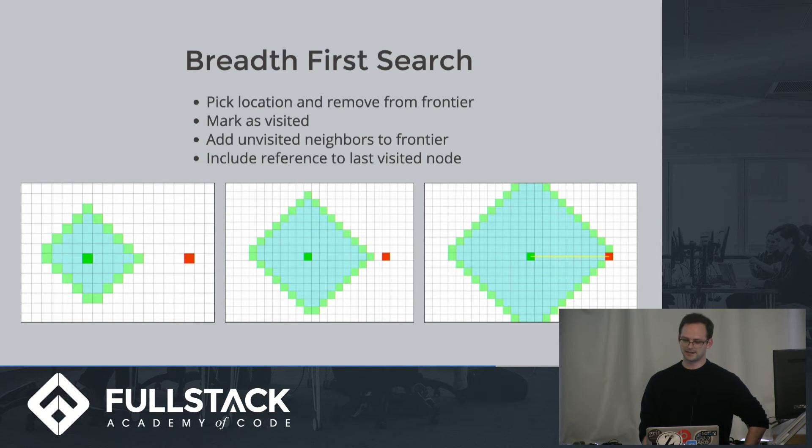For each unvisited neighbor we add to the frontier, we make sure to include a reference to the current node we are on. This way we can retrace our path once we reach the goal node. This loop will continue until we either reach the destination node or there's no possible way to get there.